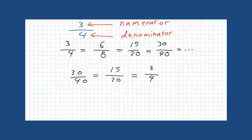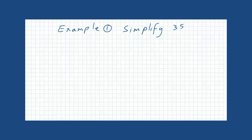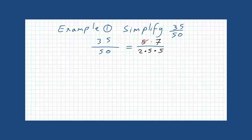This is what we call simplifying. Let us see how to simplify fractions. Example 1: Simplify 35 over 50. We know that 35 equals 5 times 7, and 50 is 10 times 5, and 10 is 2 times 5. Now cancel the common factors in both the numerator and the denominator. The remaining numbers are 7 over 2 times 5, which is 10. This is the simplest fraction equivalent to 35 over 50.